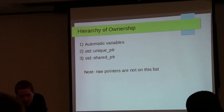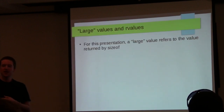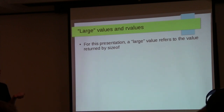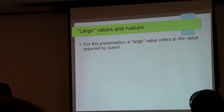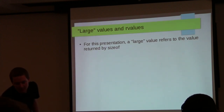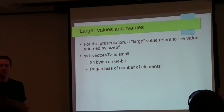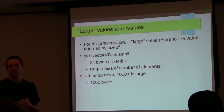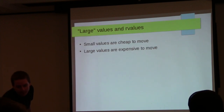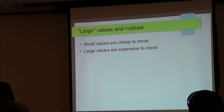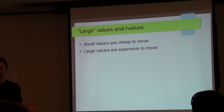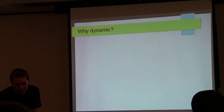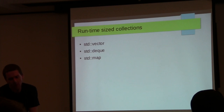For this presentation, a 'large' value is one with a large sizeof. For example, vector<T> is small — on most 64-bit systems it's 24 bytes with a pointer, size, and capacity, regardless of element count. In comparison, an array of 1000 characters is large at 1000 bytes. Small values are cheap to move; large values are expensive. A vector move is essentially three pointer assignments, whereas moving an array of 1000 chars requires 1000 character assignments.